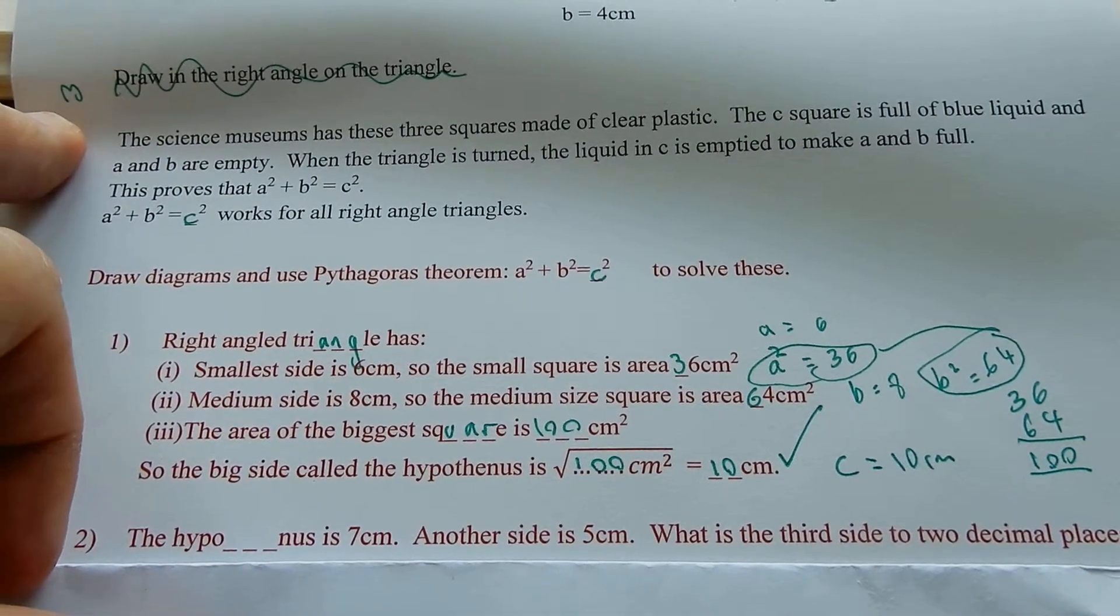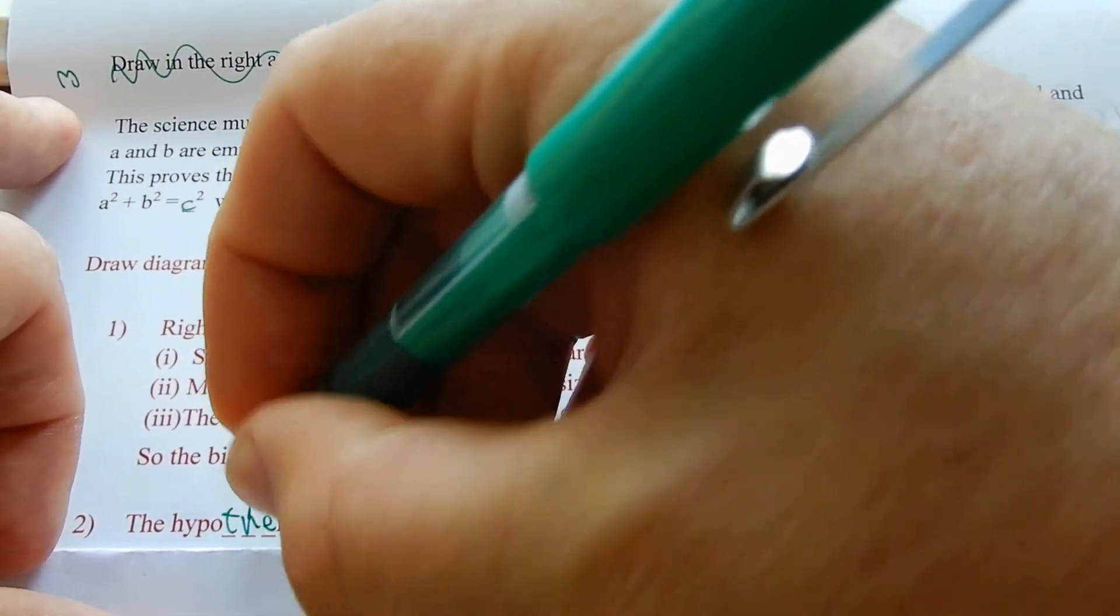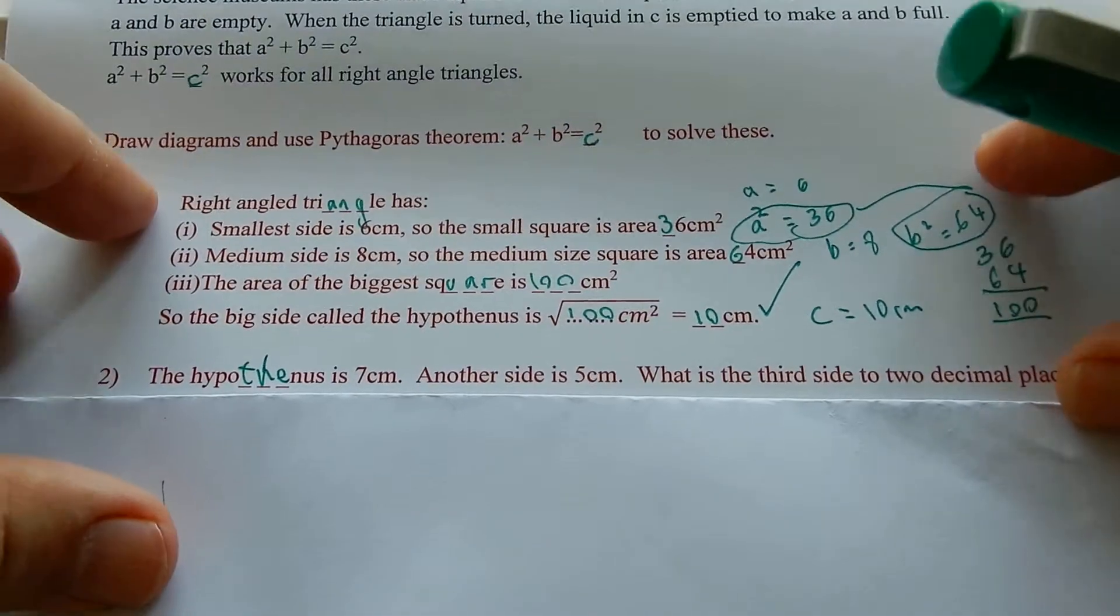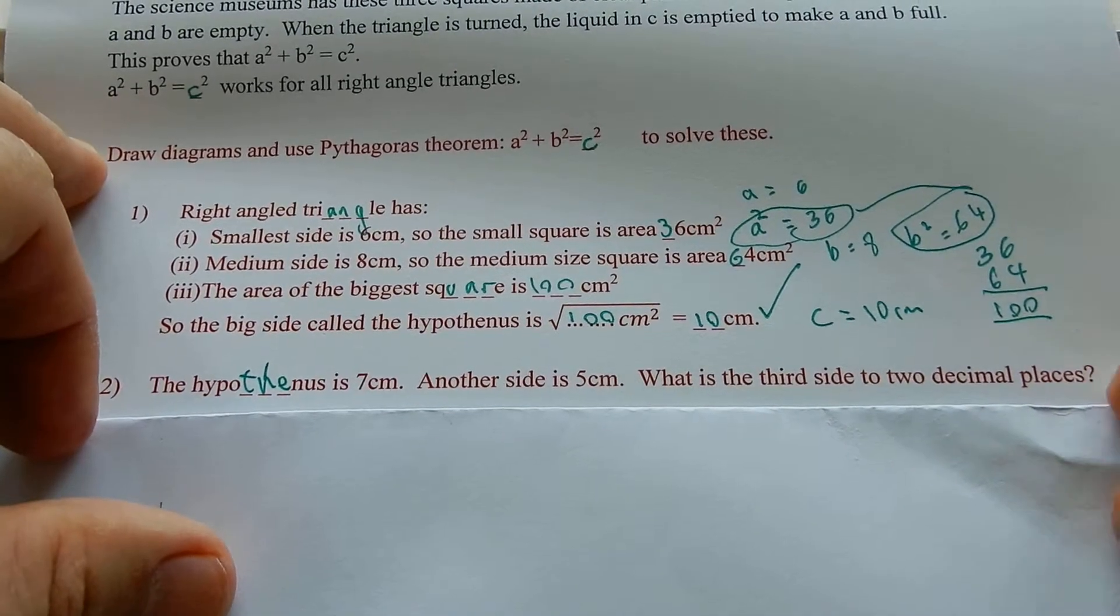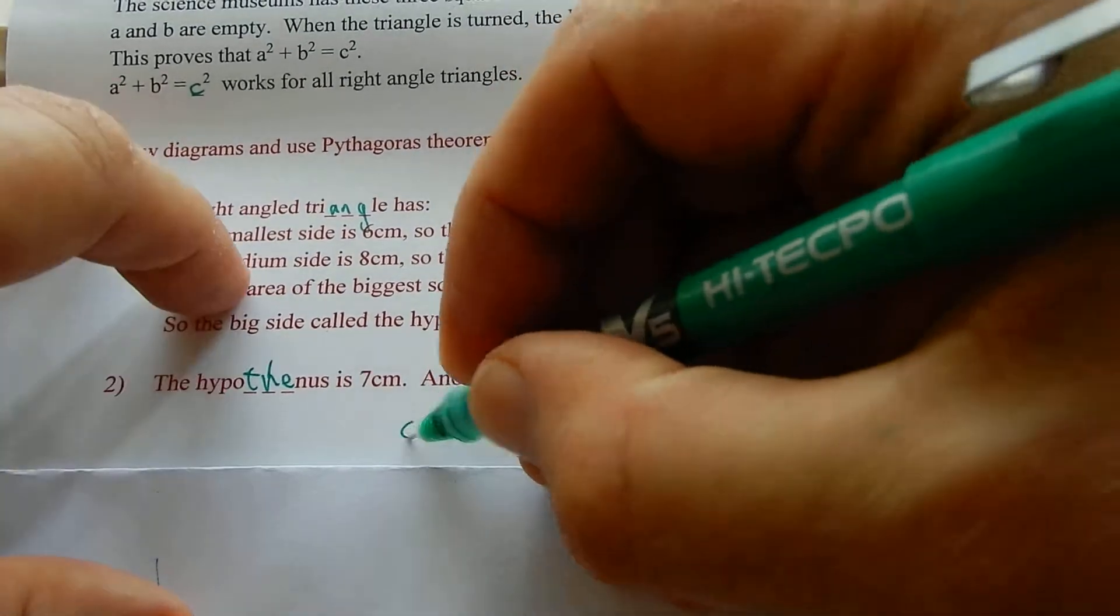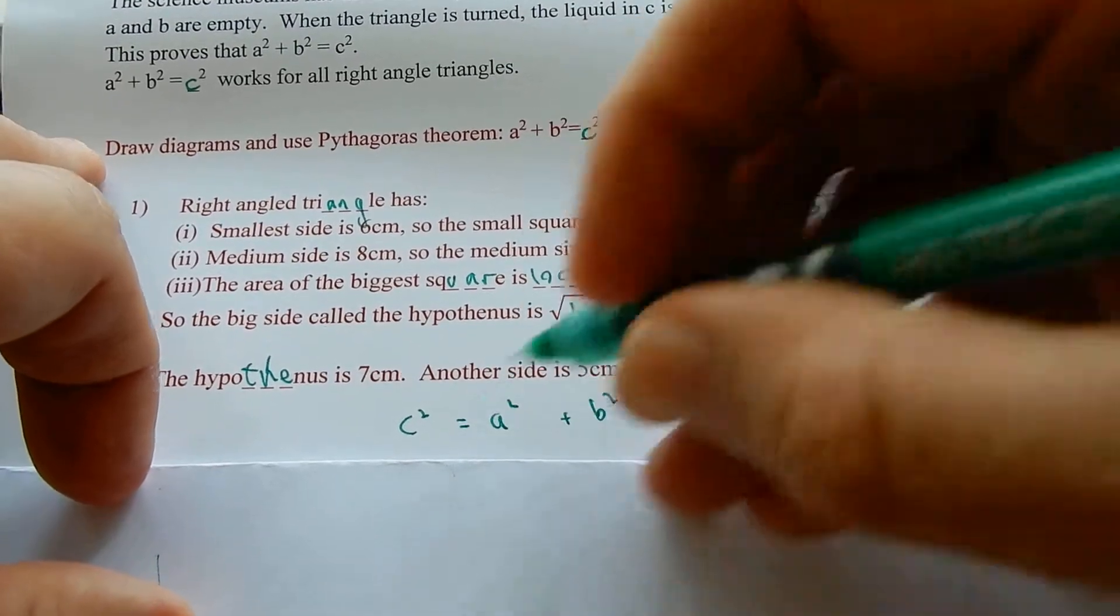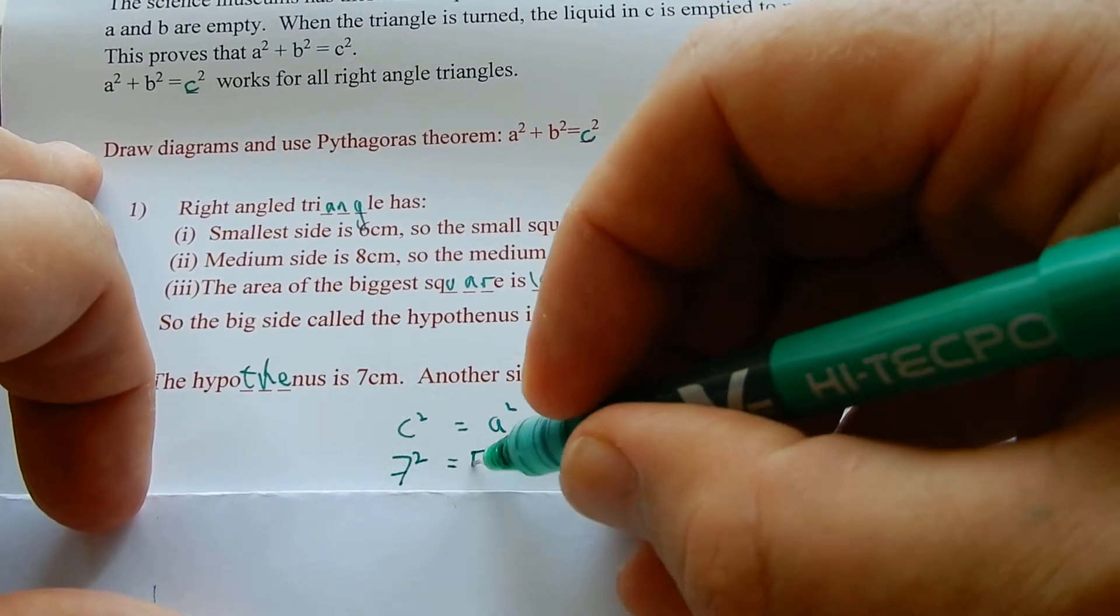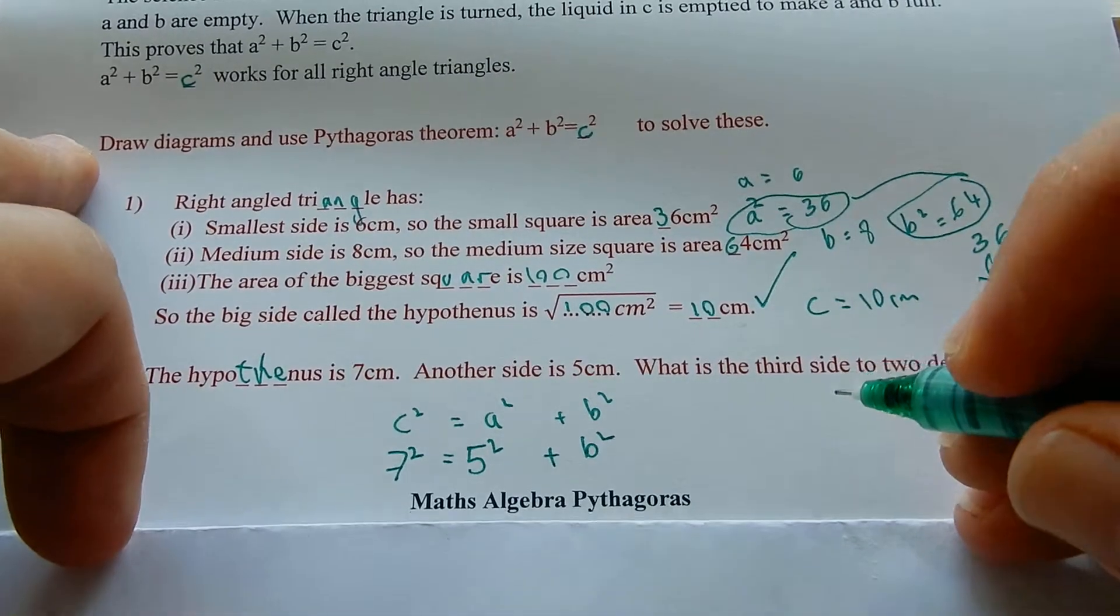The hypotenuse, hypotenuse is the biggest one. Hypotenuse is always C. It's always the biggest side on a triangle. The hypotenuse is seven centimeters. One of the other sides is five centimeters. What's the third side to two decimal places? So, C squared equals A squared plus B squared. Okay. So, seven squared equals five squared, it might be the smallest one, but anyway, plus B squared.